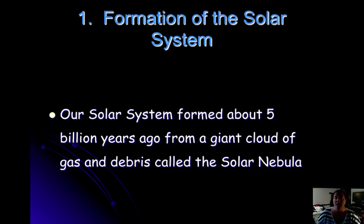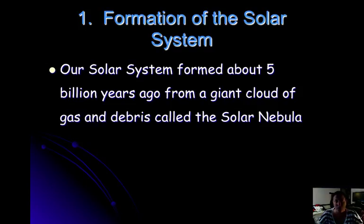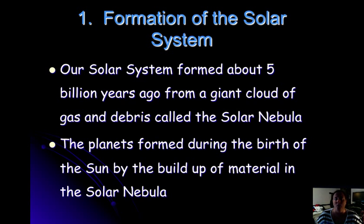Our solar system formed about 5 billion years ago from a giant cloud of gas and debris called the solar nebula. The solar system formed all together at the same time — the sun, the planets, the moons, everything in between. You can find this in the reference table on page 8, which states the solar system and Earth formed about 4.6 billion years ago. Planets formed during the birth of the sun by the buildup of material in the solar nebula, a big cloud of gas and dust that came together due to gravity.